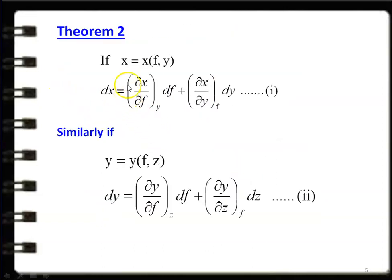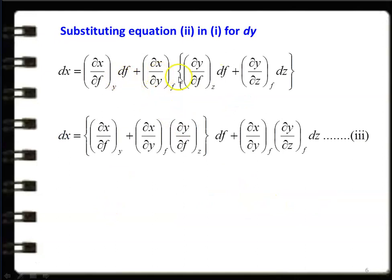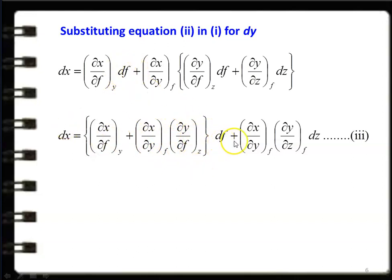dx equals the first term (∂x/∂f) at constant y · df, plus (∂x/∂y) at constant f · dy. This dy is replaced by the second equation: (∂y/∂f) at constant z · df + (∂y/∂z) at constant f · dz. Combining and rearranging, we have: [(∂x/∂f) at constant y + (∂x/∂y) at constant f · (∂y/∂f) at constant z] · df + [(∂x/∂y) at constant f · (∂y/∂z) at constant f] · dz. This is equation number 3.